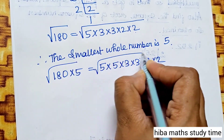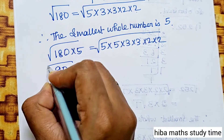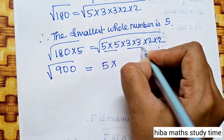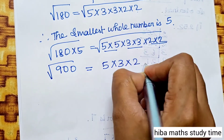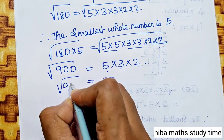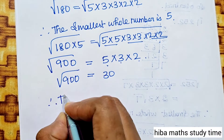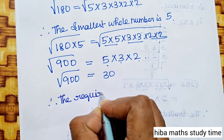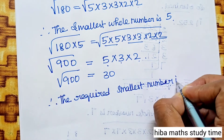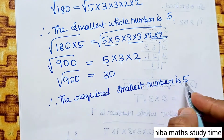We multiply 180 by 5. So, 5 × 3 × 3 × 2 × 2 × 5 gives 900. Applying the square root: root of 900 is 30. Therefore, the required smallest number is 5, and √900 = 30.